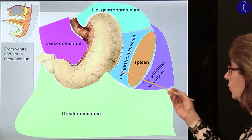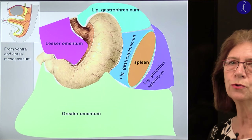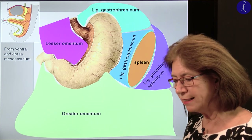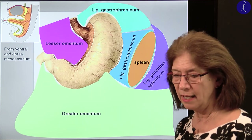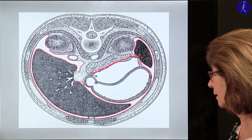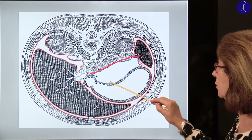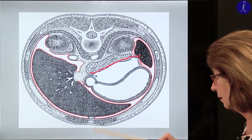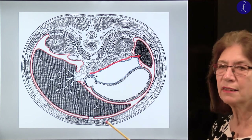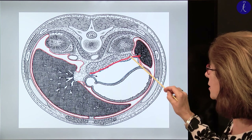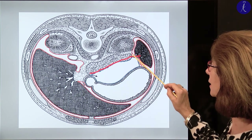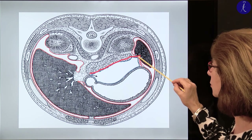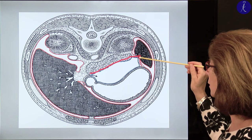Behind the stomach we have the bursa omentalis, the lesser sac. A secondary retroperitoneal organ is also the pancreas. In the retroperitoneum there is the splenic artery, which runs retroperitoneally and can reach the spleen through the phrenicosplenic ligament — it reaches the spleen at the hilum. Also to this hilum territory the gastrosplenic ligament connects. This gastrosplenic ligament allows the short gastric arteries and the left gastroepiploic artery from the splenic artery to go through these connections to the greater curvature territory.